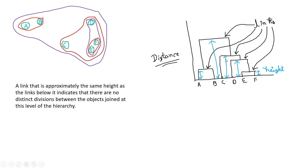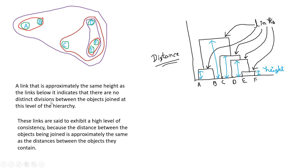A link at approximately the same height as the link below it indicates there is no distinct division between the objects joining at that level of the hierarchy. The DEF cluster and C cluster don't have much difference — you can see this from the picture and from the dendrogram where the heights of consecutive links are very small. These links are said to exhibit a high level of consistency, because much similarity is present and the distance between the objects being joined is approximately the same.